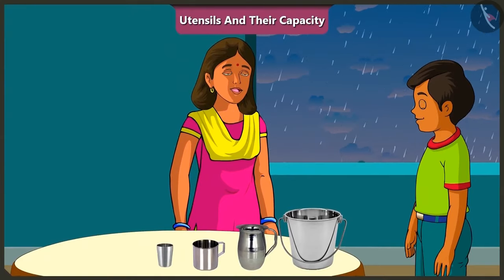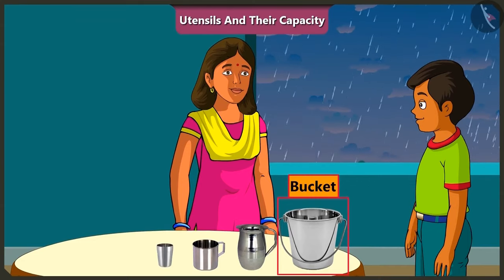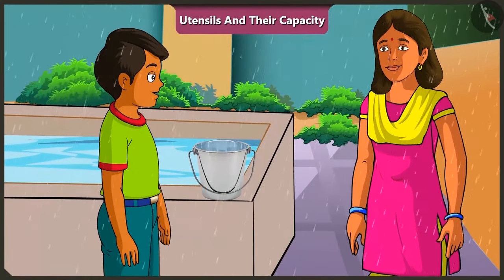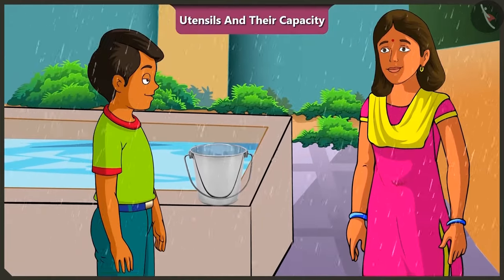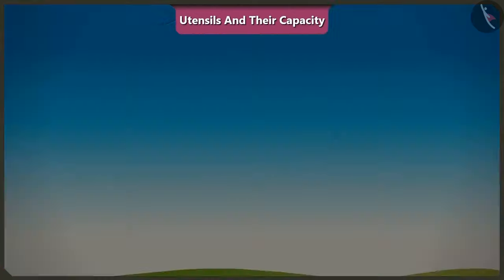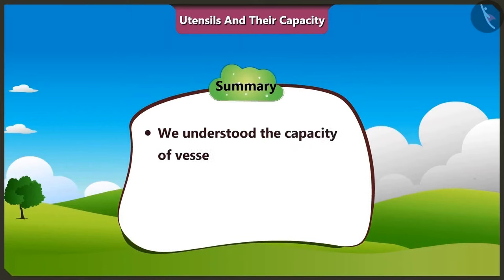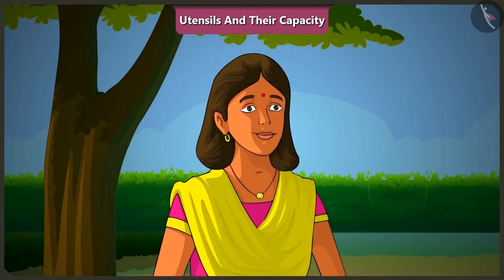Mishtu, just tell me which vessel should we use to collect rainwater? We should collect it in this bucket because the bucket has the highest capacity. And with the help of this bucket, it will be possible to fill the tank much faster. So children, today along with Mishtu, we understood the capacity of vessels and that different vessels have different capacities. In the next video, we will understand why vessels fill up on putting objects in half-filled containers.